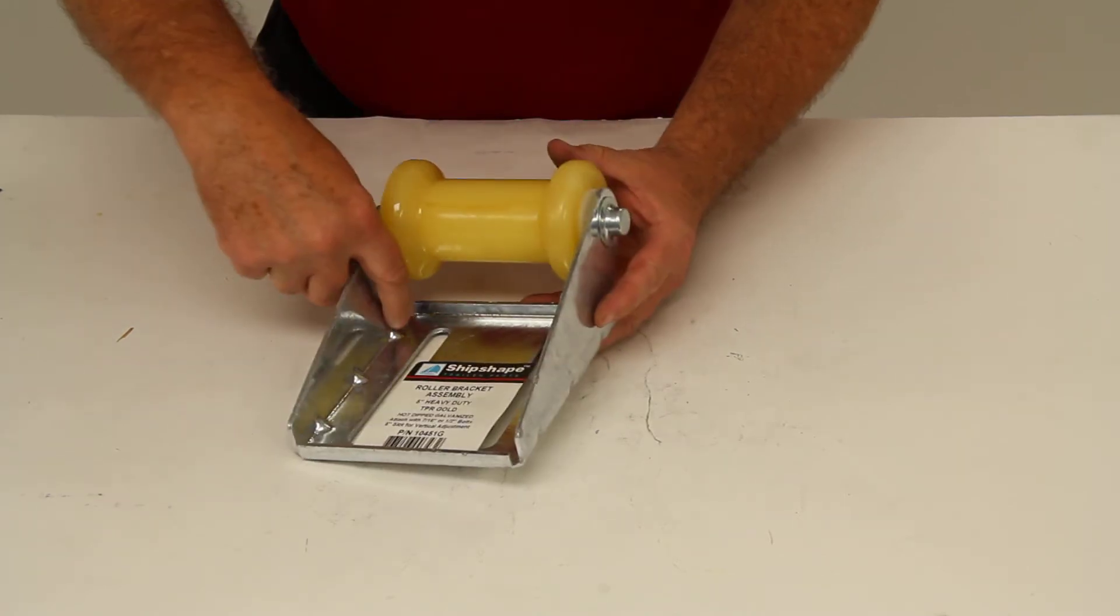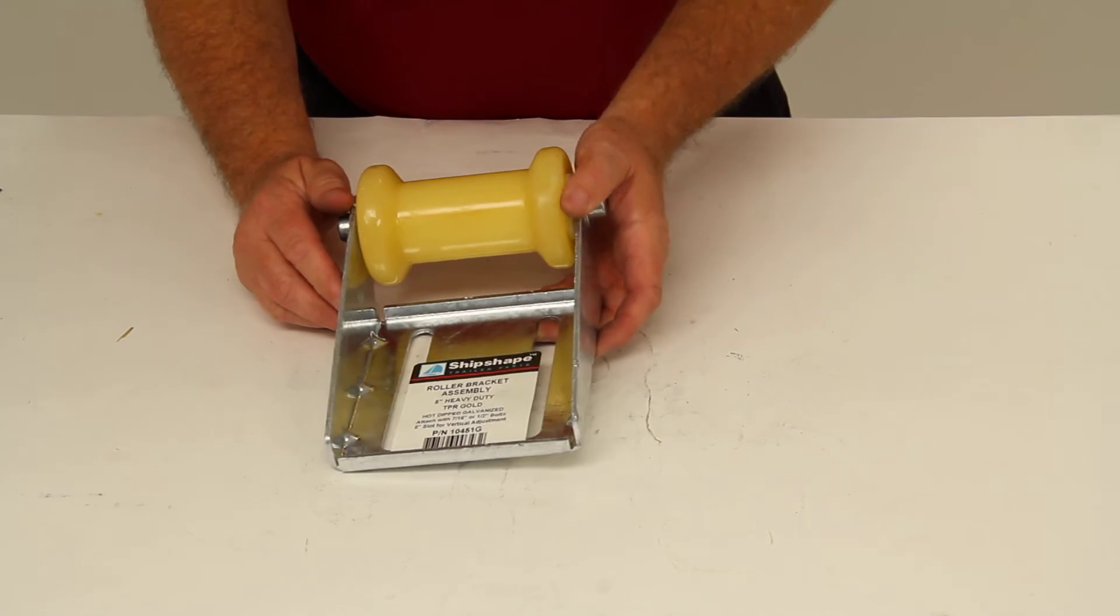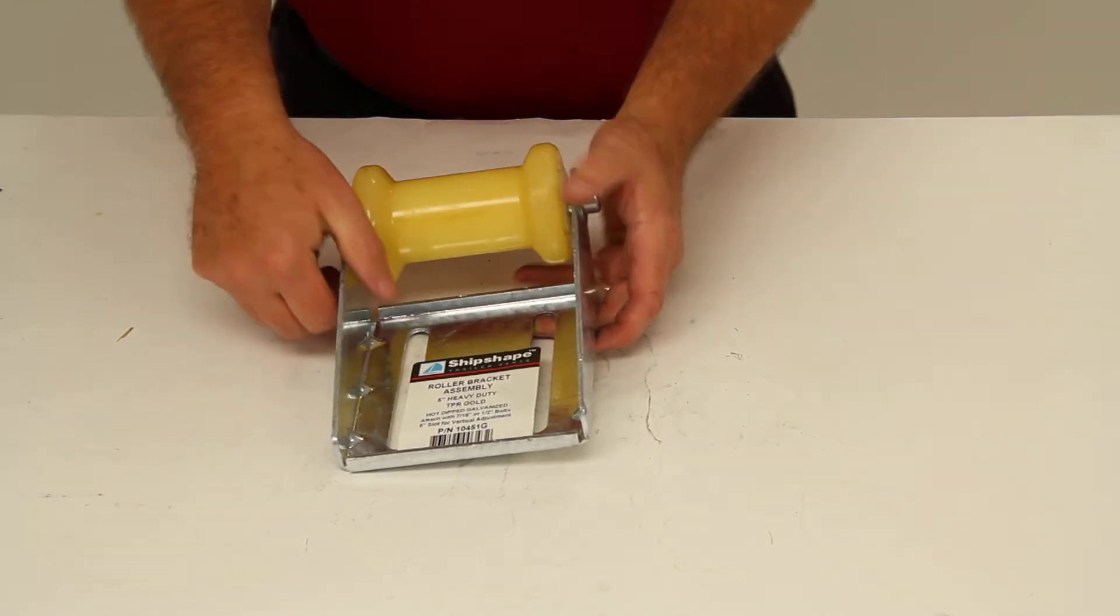This does have gussets on it. There's three on each side. So these six gussets will provide extra strength by stiffening the bends.